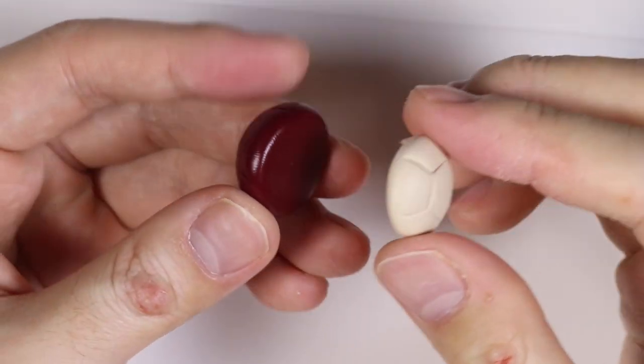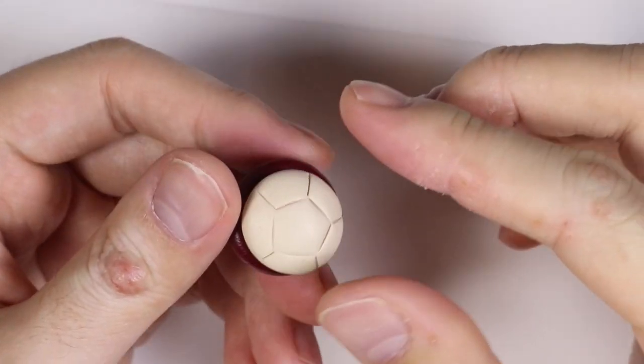We're going to attach the two pieces together, and I'm rolling out some white clay just to line the shell together.